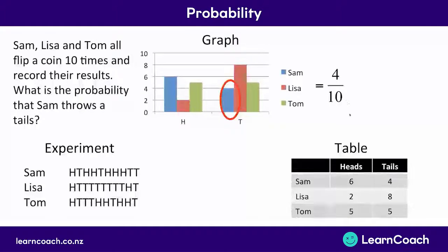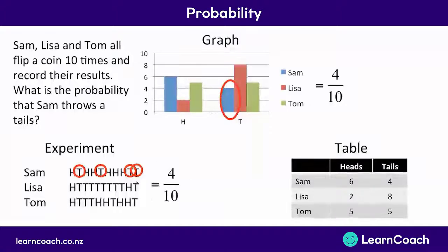Secondly, if we were given that same information as an experiment, you could look at the number of times that Sam threw a tails — all of the T's in his experiment. This again would give you four tails out of a total of ten throws. Or again in the table, four tails out of ten throws gives us a probability of four out of ten.